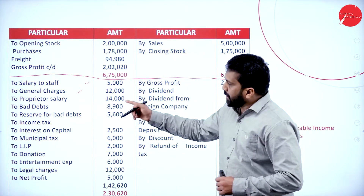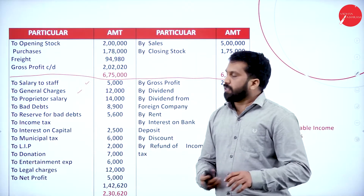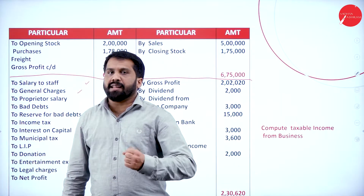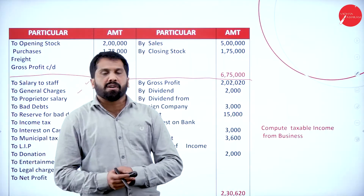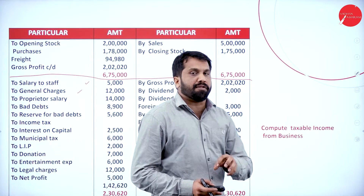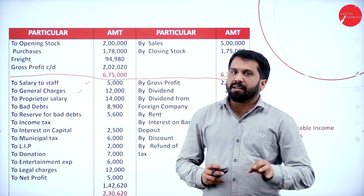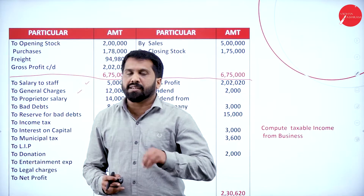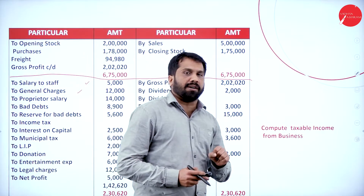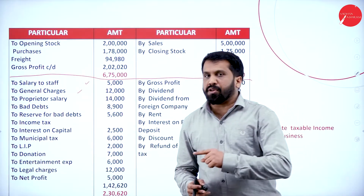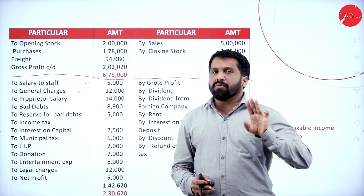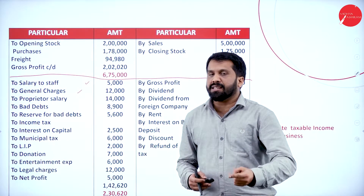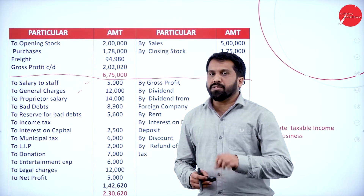And a few things, even though which are related to business — but with adjustment, like salary paid to staff. Salary paid to staff is part of your business. In the adjustment, they have given: out of 30,000 salary, 5,000 paid for watchman for house. Now, watchman for house — you are paying 5,000. But is that 5,000 related to your business? No. Out of 30,000, 5,000 you have to take out because 5,000 you are spending for your personal expenses.